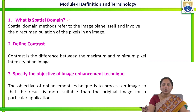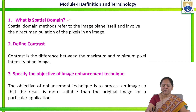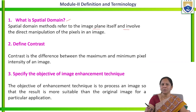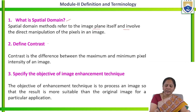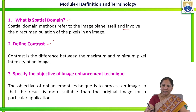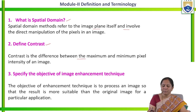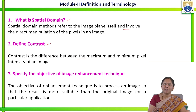What is spatial domain? In the spatial domain, the operation will be performed directly on the pixel. Spatial domain methods refer to the image plane itself and involve the direct manipulation of pixels in an image. Next, define contrast: contrast is the difference between the maximum and minimum pixel intensity — that is, maximum pixel intensity minus minimum pixel intensity represents the value of contrast.